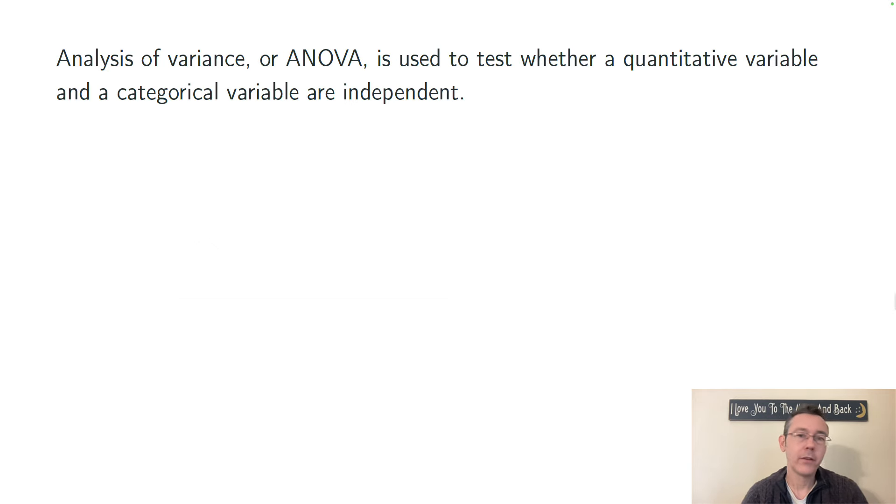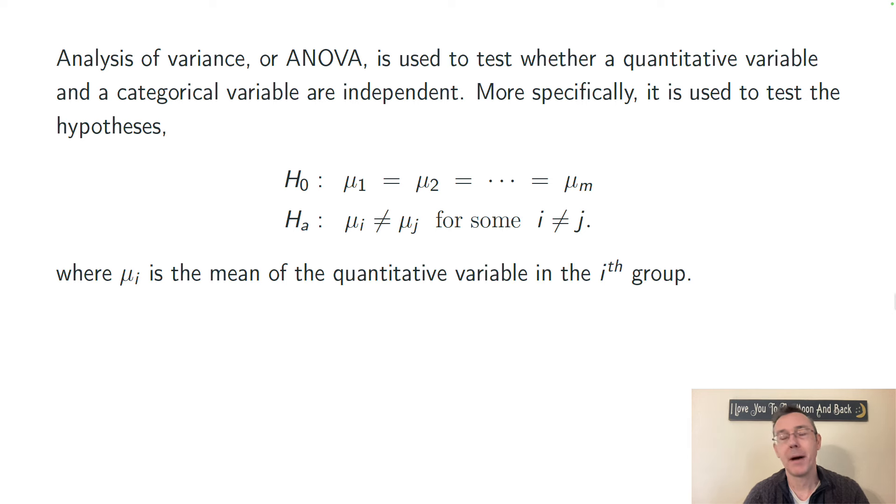ANOVA is used to test whether a quantitative variable is independent from a categorical variable. A bit more mathematically, we're testing the null hypothesis that the mean of the quantitative variable is the same for every level of the categorical variable. That is, its mean is the same across groups.